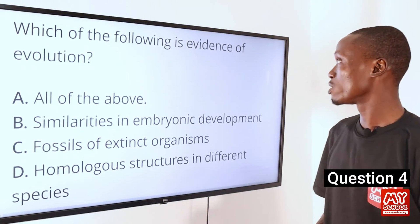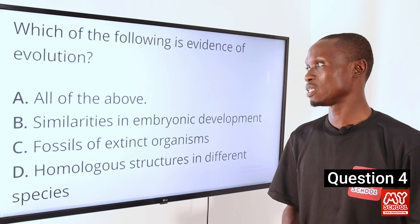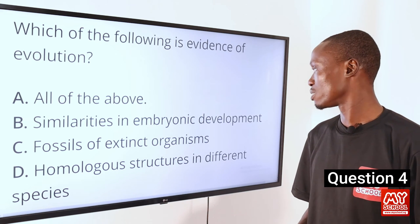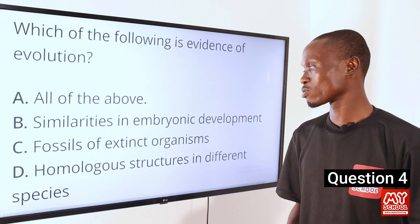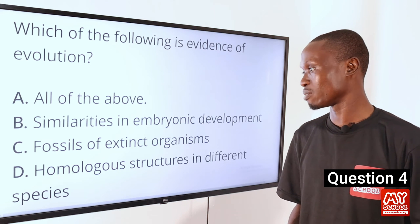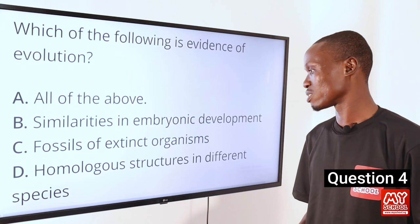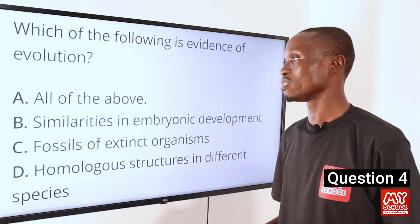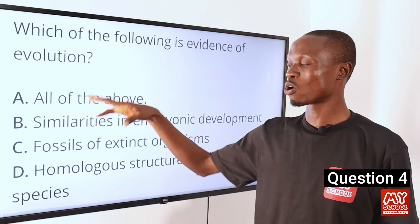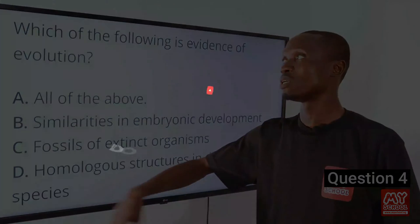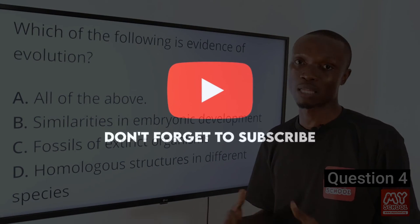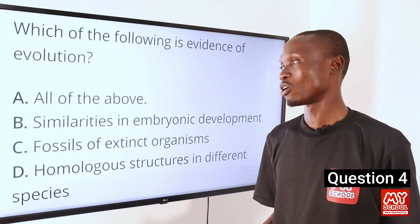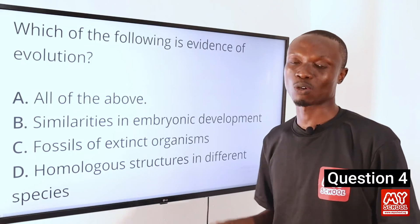Question 4. Which of the following is evidence of evolution? A, all of the above. B, similarities in embryonic development. C, fossils of extinct organisms. D, homologous structures in different species. The answer is option A, because all the other options from B to D support the fact that organisms have evolved and changed over time.